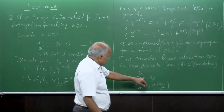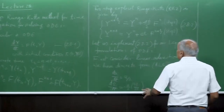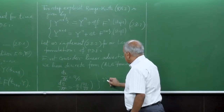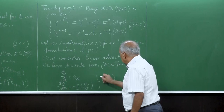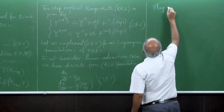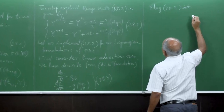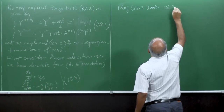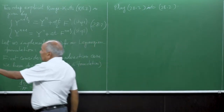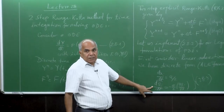Now let us implement this. We plug equation 28.3 into 28.2. So what will happen? I have just presented one equation, but we have 2*N equations — because I run from 1 to N here, and from 1 to N here. Therefore the total number of ODEs is 2N.